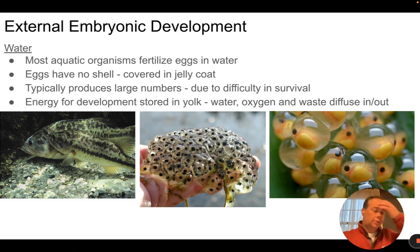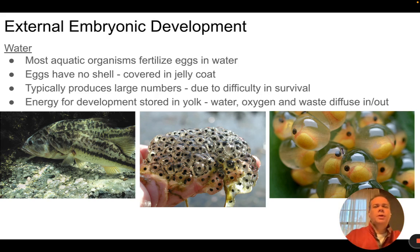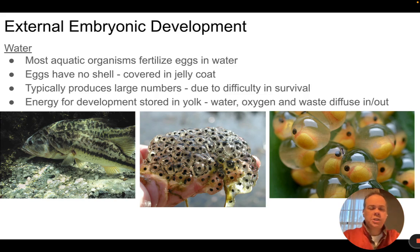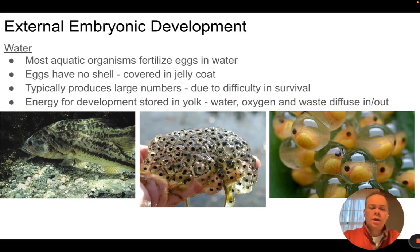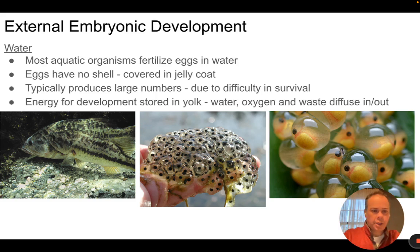When thinking about reproduction in different types of animals, we can consider where the egg gets fertilized and where the fertilized egg develops into an embryo. In some organisms — mostly aquatic ones — fertilization doesn't take place inside the organism but in the water. This is called external fertilization, and most fish and amphibians reproduce this way. For example, fish undergo spawning: the female releases eggs into the water and males release sperm, and the sperm cells find and fertilize the eggs.